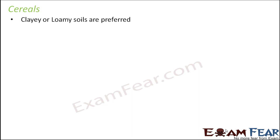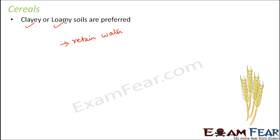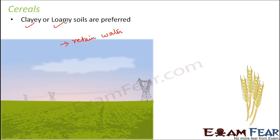Let's first talk about cereals. They generally prefer soils which retain water. Clay soils and loamy soils both retain comparatively more water. If you take wheat as an example, it would prefer clay or loamy soils, but more specifically it prefers fine clay soils because clay soils are very rich in humus. So fine clay soils with humus would be the ideal soil for wheat.